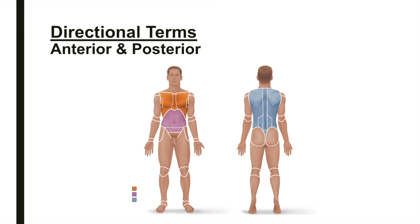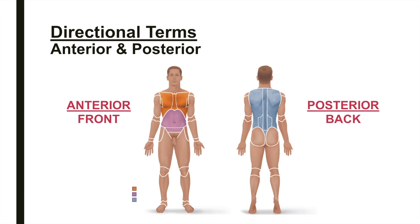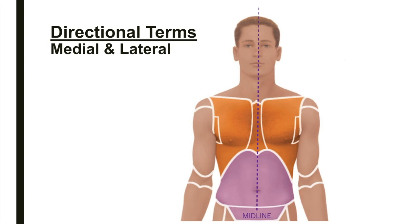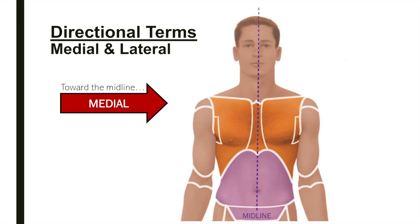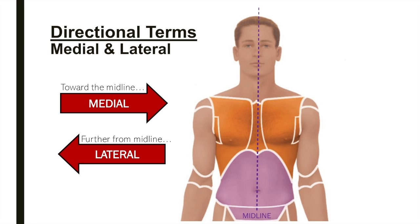Anterior describes structures that are on the front of the body, while those towards the backside of the body are posterior structures. Medial refers to structures toward the midline, while lateral describes those that are further away from the midline. For example, the otic region is medial to the acromial region.